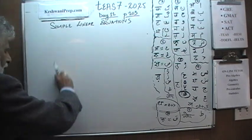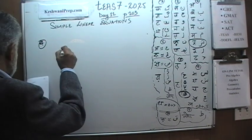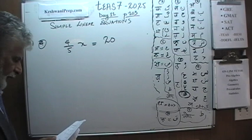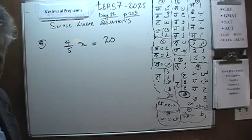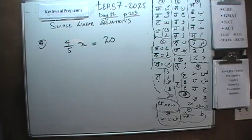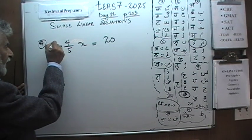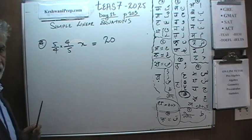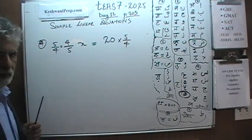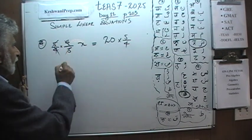That's number 4. We are told that 4 fifths of x is equal to 20. We have to figure out what x is. We have to isolate the x, we want the x by itself. How do we get rid of this 4 fifths? Very simple. If you want to get rid of 4 fifths, multiply it by its reciprocal. Reciprocal means the flip side. If you want to multiply 4 fifths by 5 fourths, we can get rid of it. But since we are multiplying this side by 5 fourths, we have to do the same thing here.